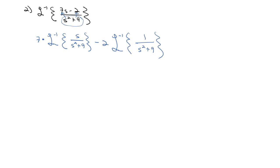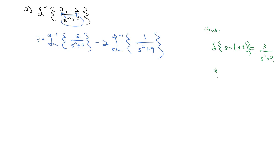Now I go to my table. I know that the Laplace transform of sine of a constant times t is equal to that constant divided by s squared plus the constant squared. Seeing that the constant squared is 9, that must mean my constant is 3. So the Laplace transform of sine of 3t is 3 over s squared plus 9, and the Laplace transform of cosine of 3t is s over s squared plus 9. So my first term is all ready to go — we've got 7 times the inverse Laplace transform of s over s squared plus 9, which is the cosine of 3t.